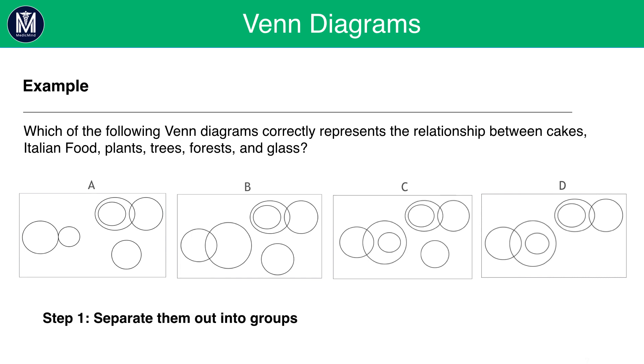I hope you're ready now. The first step we need to do is separate the information presented into groups. We have cakes, Italian food, plants, trees, forests and glass. So the question you have to ask yourself is, how do these items relate to each other? We know cakes and Italian food are items that we can eat. Plants, trees and forests are all part of one umbrella group. And glass is separate to all three.